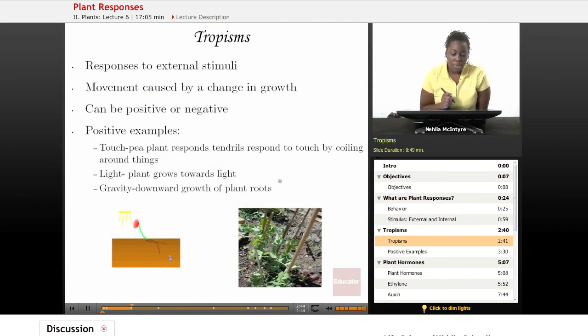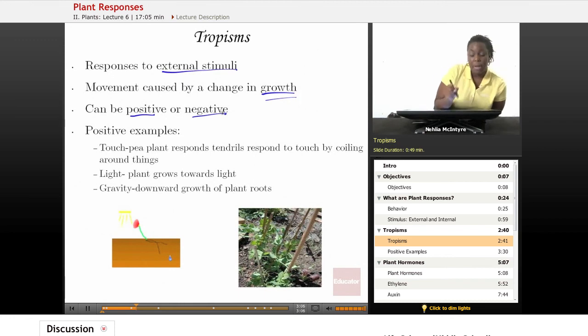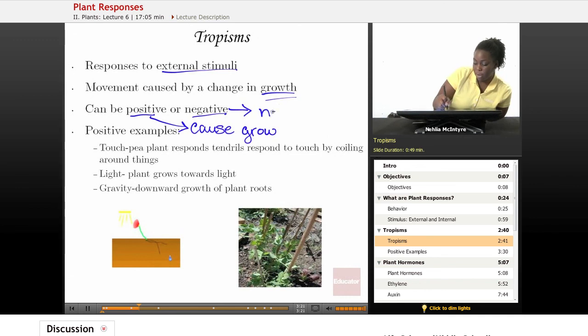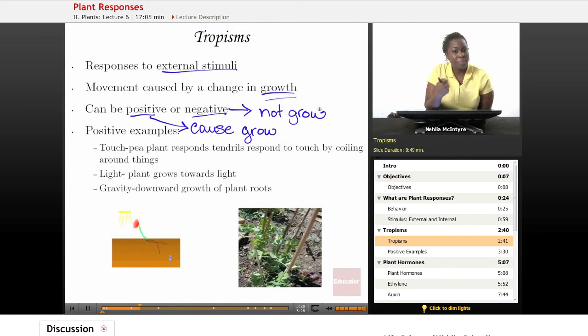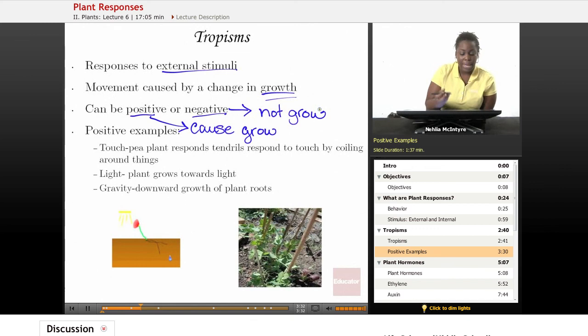Tropisms are the word that we use to describe the responses that plants and other organisms have to external stimuli. Tropisms are responses that cause a movement or a change in growth of a plant. Tropisms can be positive or negative. Positive tropisms would cause the plant to grow, and negative tropisms would cause the plant to not grow. Again, tropisms are responses caused by external stimuli. Here are some examples of tropisms. We'll just talk about the positive examples for this lesson.